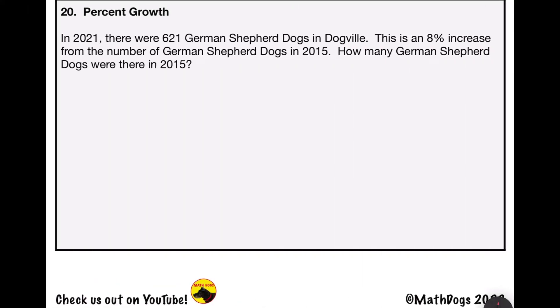Problem number 20 is percent growth. In 2021, there were 621 German Shepherd dogs in Dogville. This is an 8% increase from the number of German Shepherd dogs in 2015. How many German Shepherd dogs were there in 2015? Since that's our question and what we're finding, that's going to be our variable x — x equals the number of German Shepherd dogs in 2015.